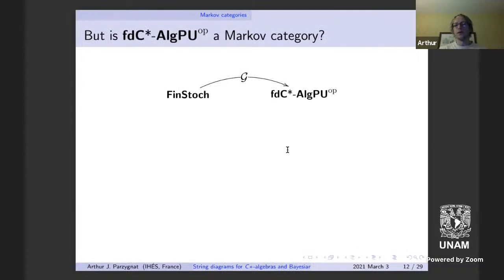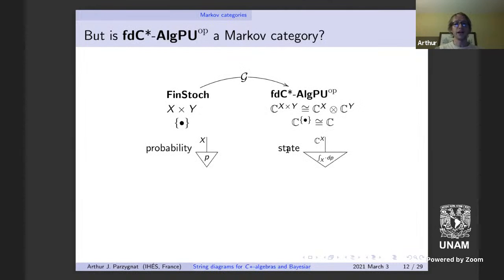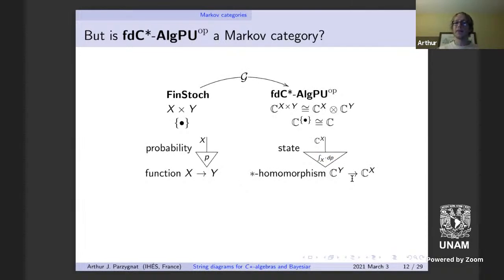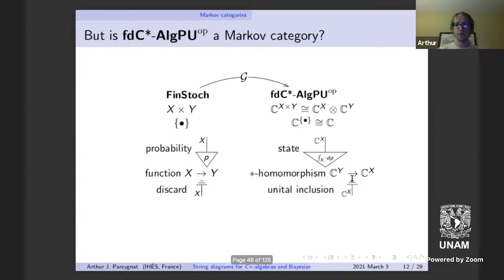A positive unital map — positive elements in a matrix algebra are self-adjoint matrices whose spectrum is non-negative, having all non-negative eigenvalues. The functor takes a product of two sets to the tensor product of corresponding algebras, takes the unit to the complex numbers, and takes a probability measure on X to a state — a functional on that algebra computing expectations.